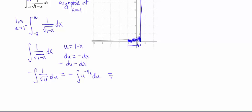Okay, so now I can go ahead and apply my power rule to this. So I get negative 2 u to the 1 half plus c. So then the 1 half power means square root. And then let me go ahead and plug my u back in as well. So I get negative 2 square root of 1 minus x plus c. Okay, this is my indefinite integral.